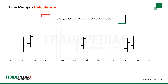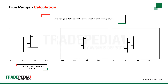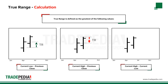True range is defined as the greatest of the following values: current low minus previous close, current high minus previous close, or current high minus current low. The average true range is a moving average of the true range for a specific time period, usually 14 periods.